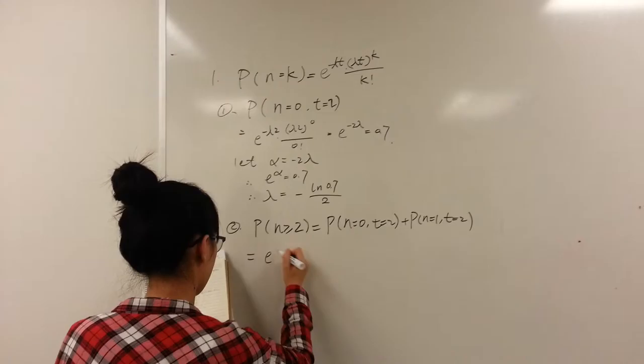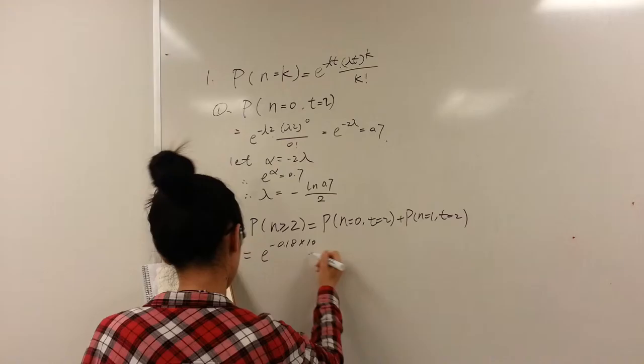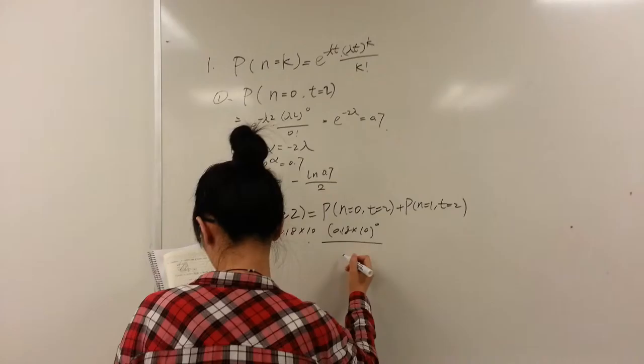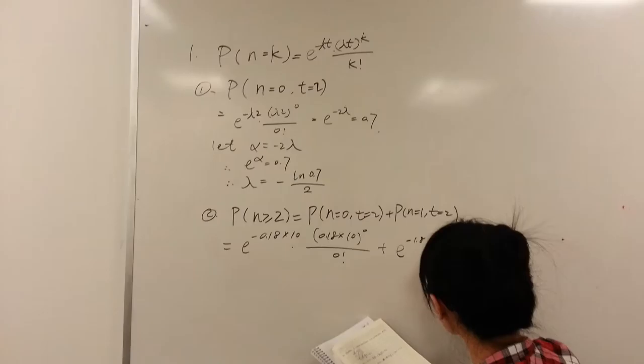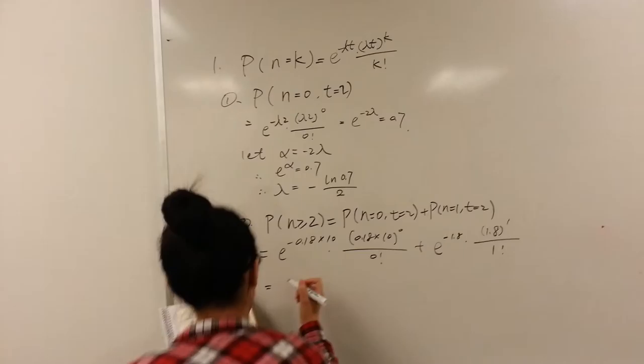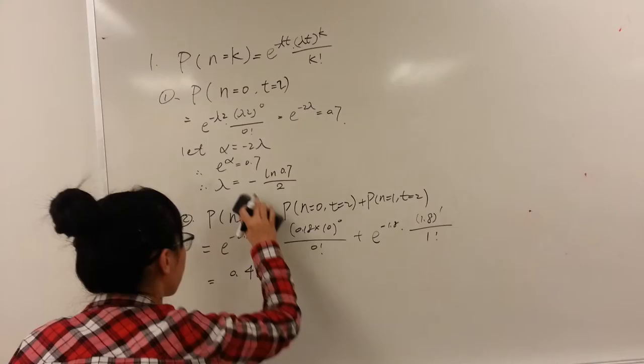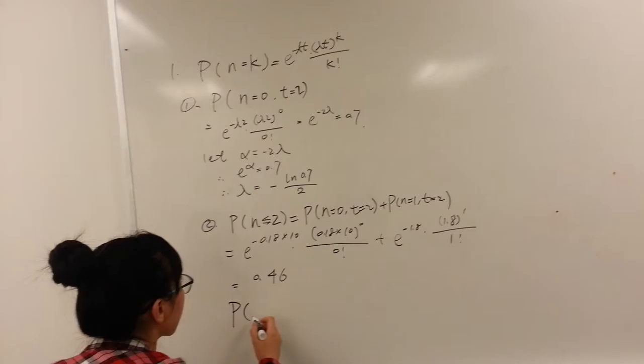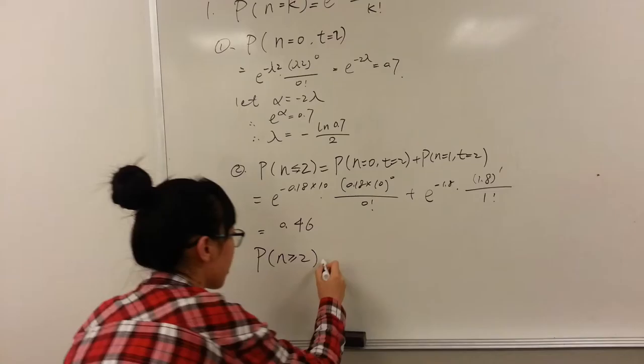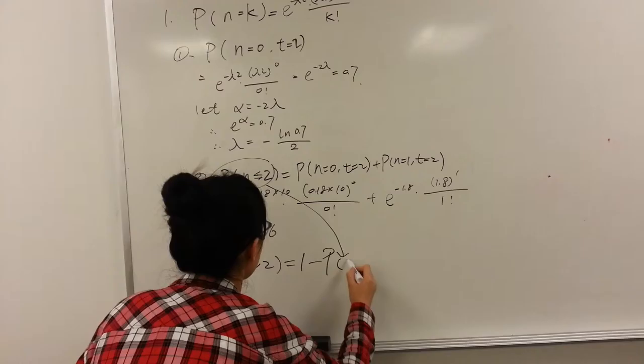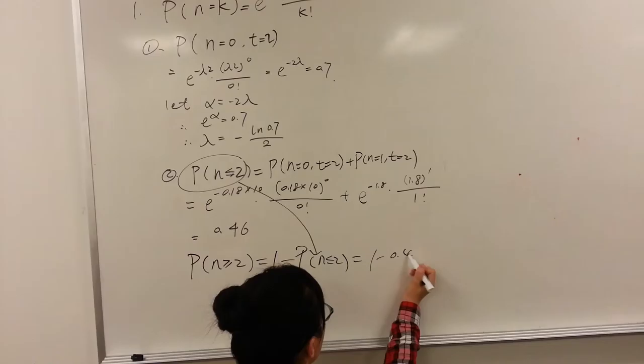So the probability should be... This is equal to... When we want to calculate the probability at least two people will arrive in ten minutes, it is equal to one minus this probability. It is one minus 0.46.